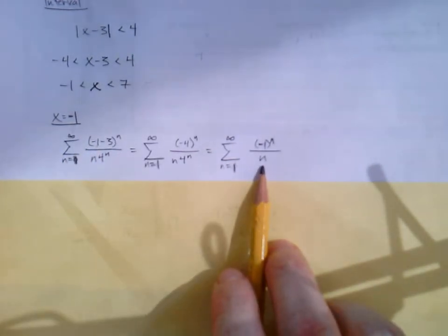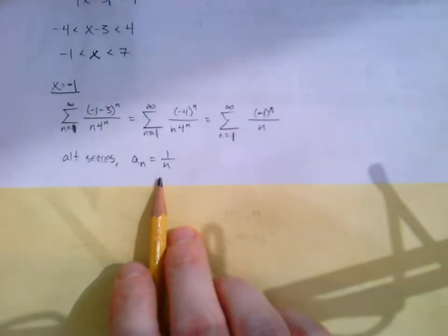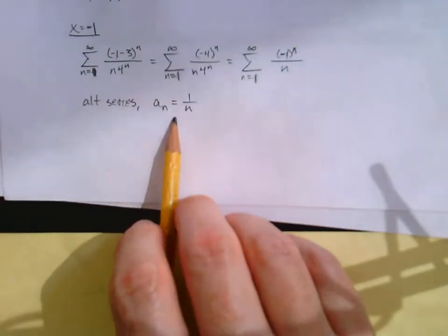Well, which series test seems to apply here? We'd say, well, I think that's an alternating series. So let's try that. Our non-alternating part is 1 over n. I think I continue on the next page. I was waiting for it. Okay, remember this.